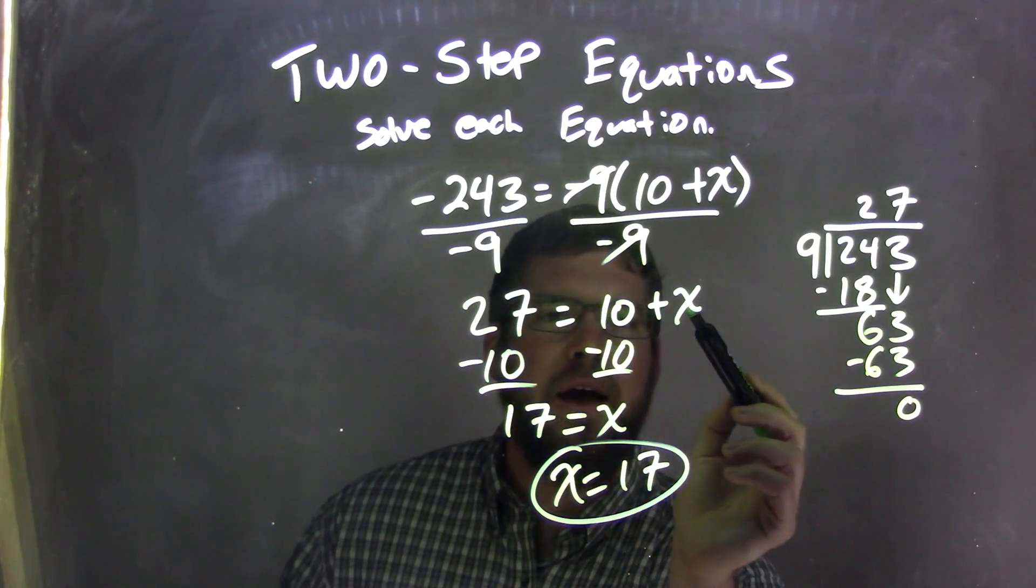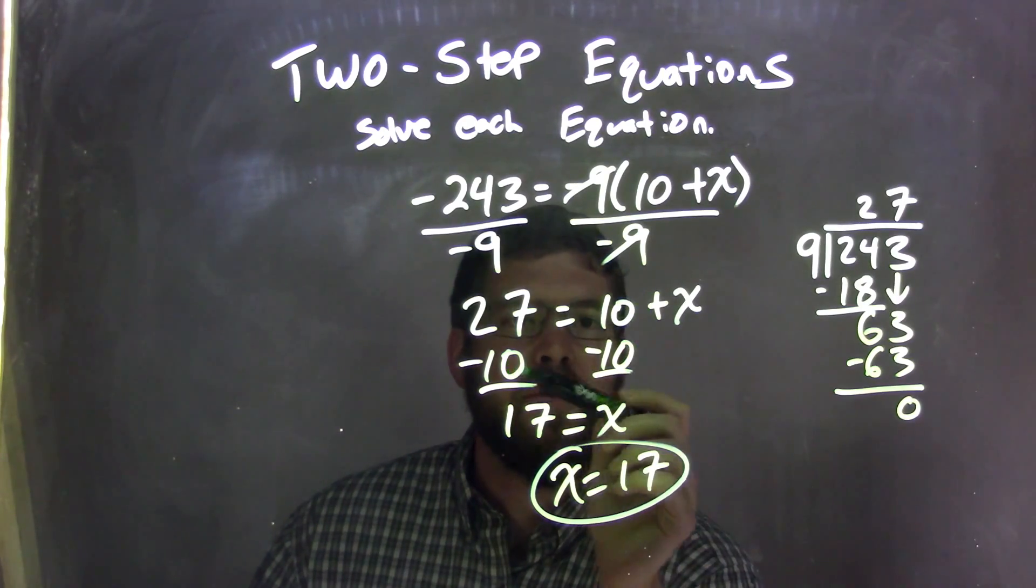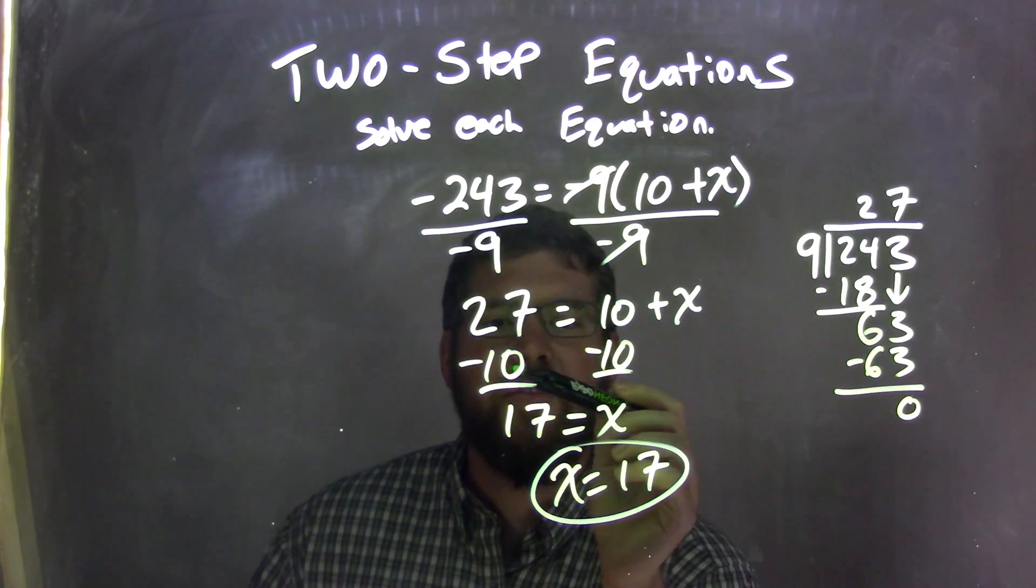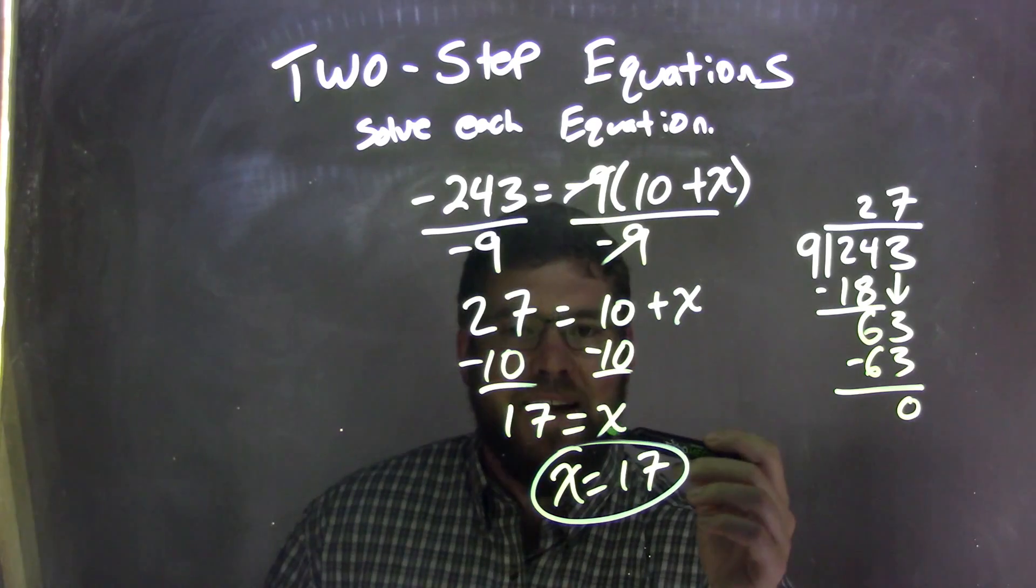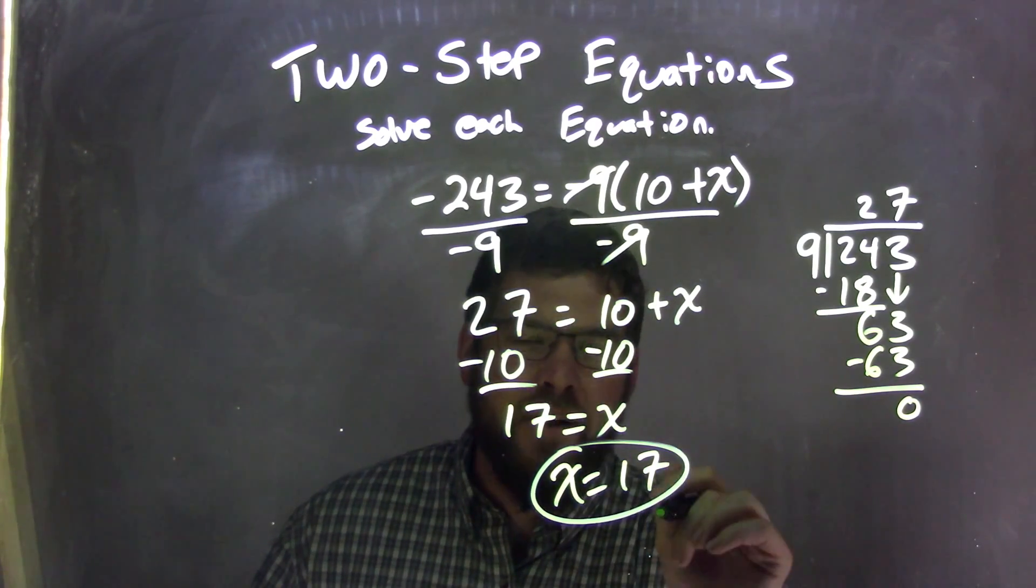So 27 equals 10 plus x. I then have to subtract 10 from both sides, right? Subtract 10 from both sides. That'll cancel that addition, leaving just x here on the right, and 27 minus 10 is 17. And so I rewrote this to make it look a little nicer with x first. And so I have x equals 17 as my final answer.